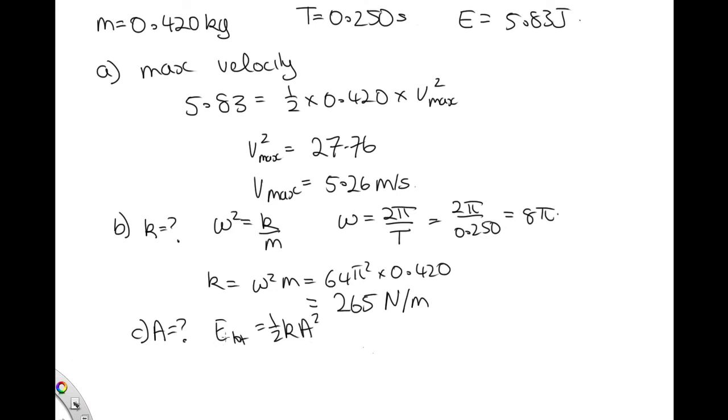We now have k and we have the total energy. So 5.83 is equal to one half times 265 times A squared. Solving this, we end up with A squared equals 0.044, which tells us that A is equal to 0.210 meters. We only take the positive square root, as amplitudes are always positive.